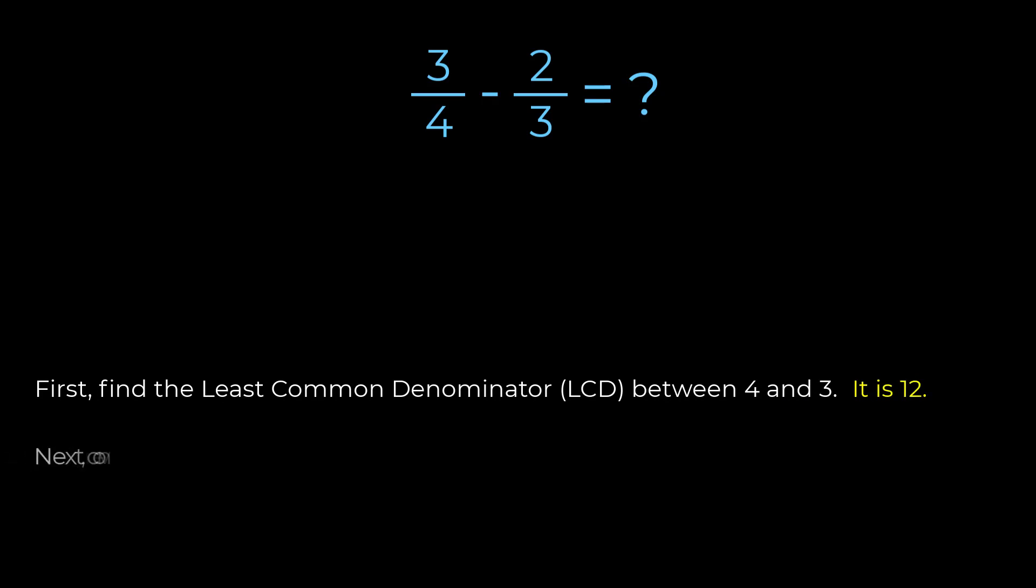Next, we have to convert both fractions into equivalent fractions with a common denominator of twelve. The first fraction, three quarters, has a denominator of four.